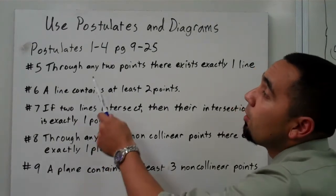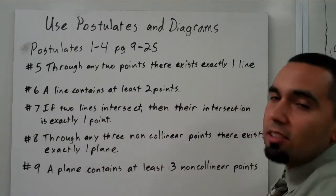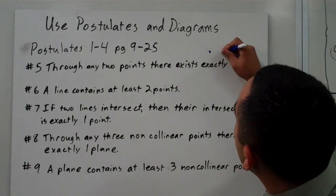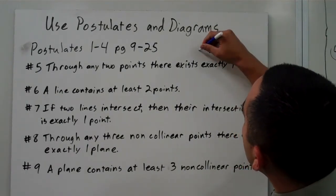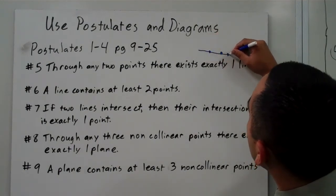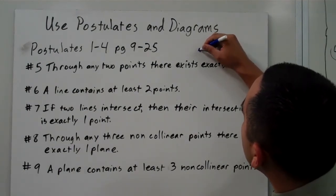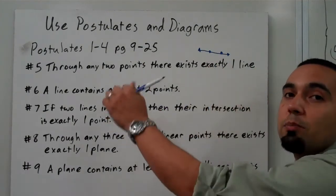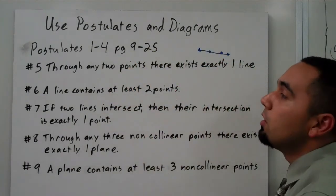So number 5 says, through any two points there exists exactly one line. And we can always kind of picture that if we have two points, we can always draw a line through it. But there is only one line that goes through those two points. If there's another line that goes over it, it's basically the same line right on top of it.